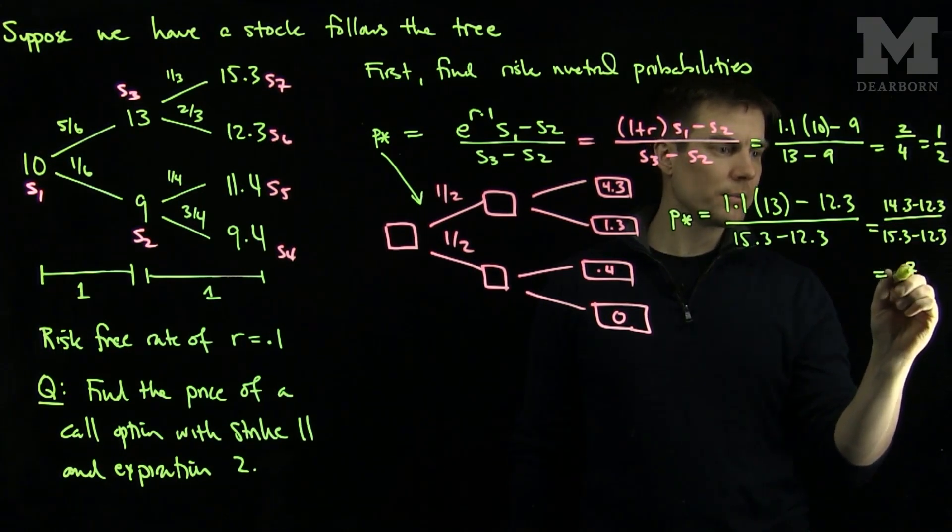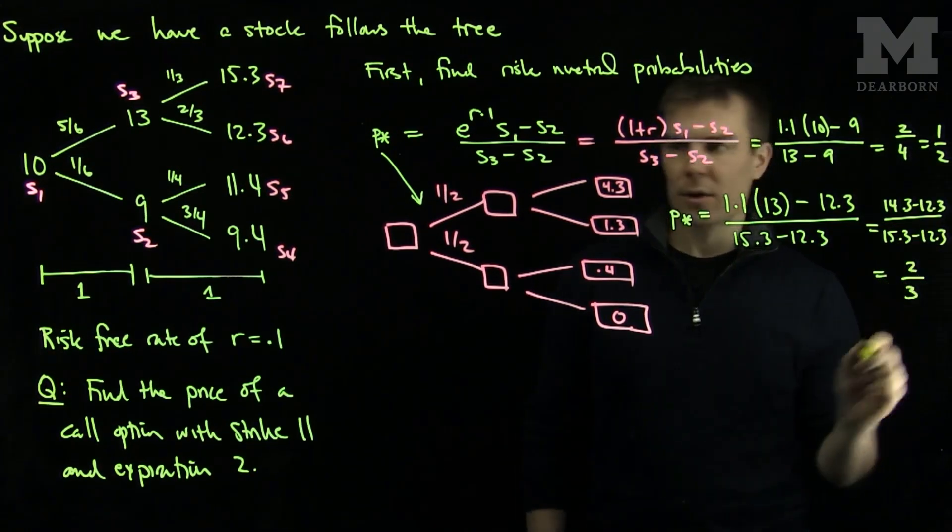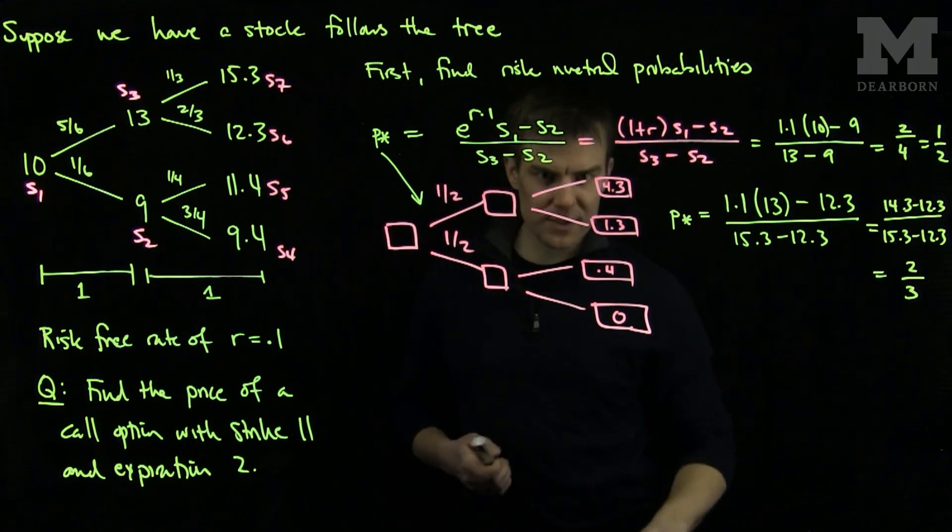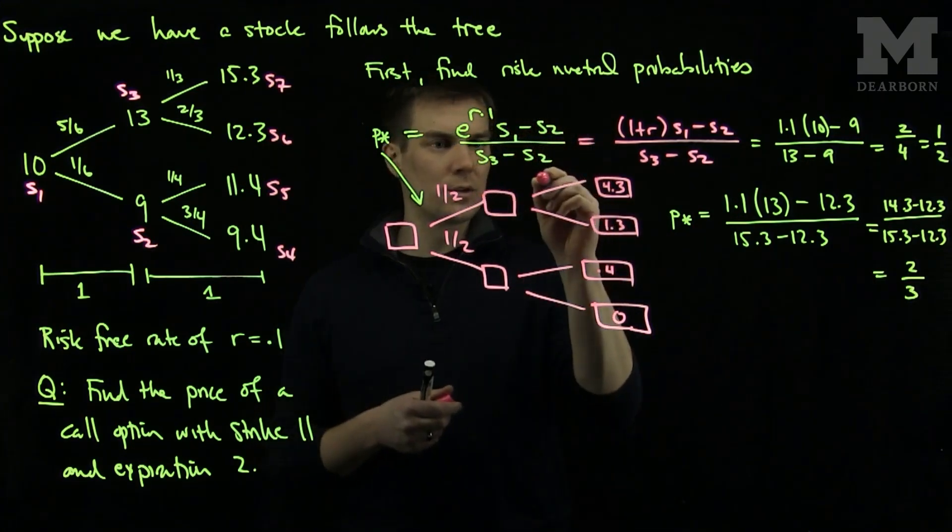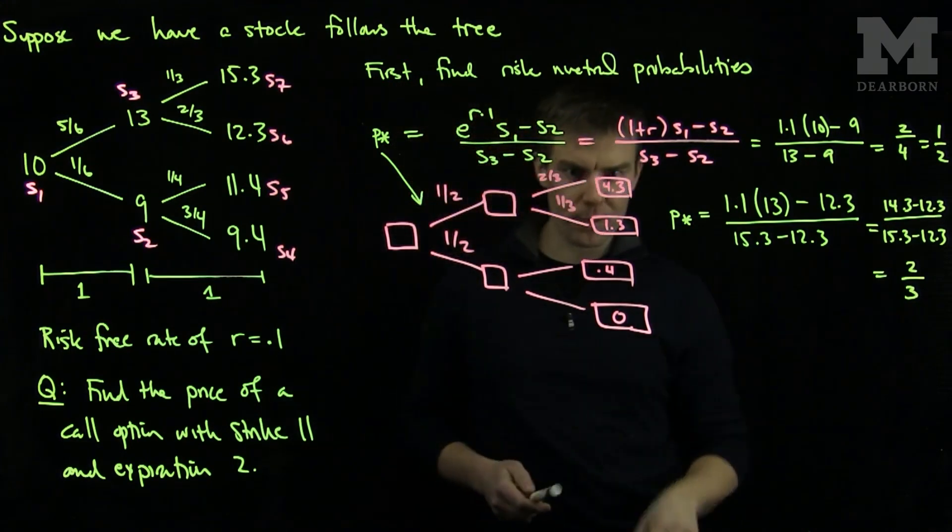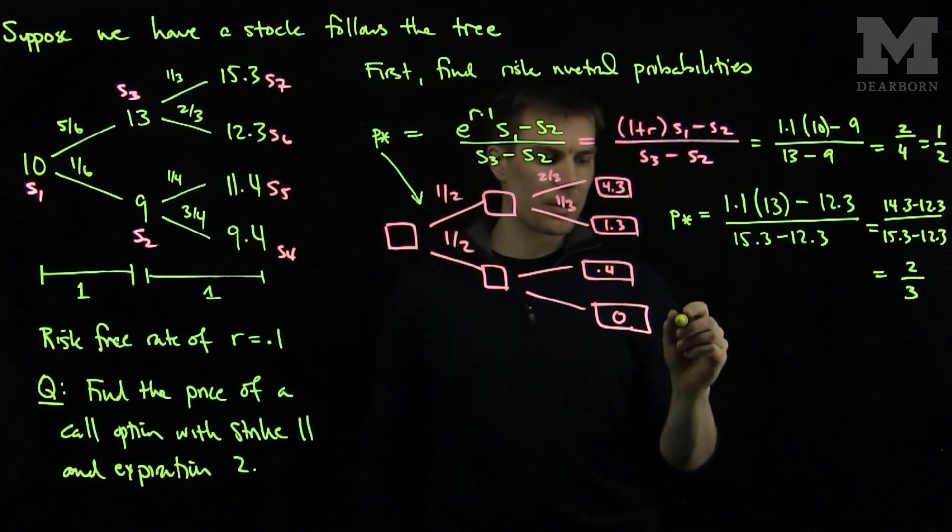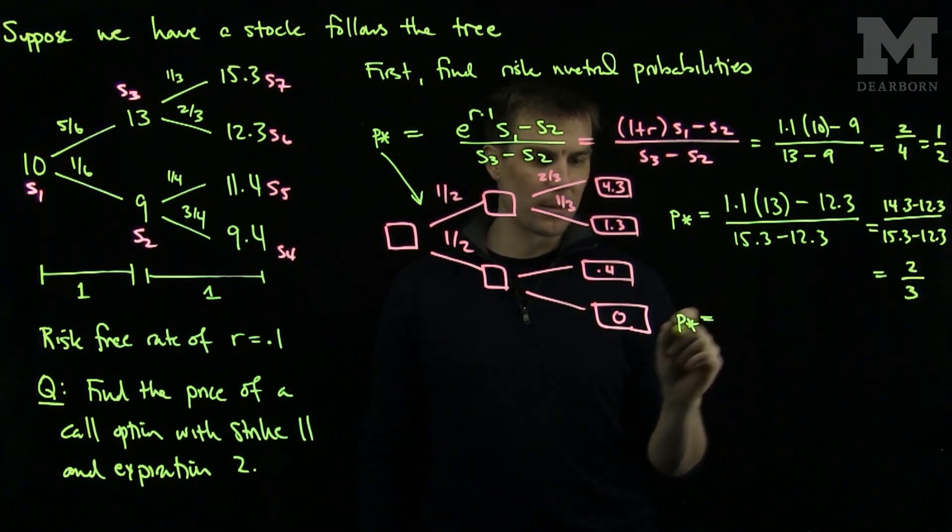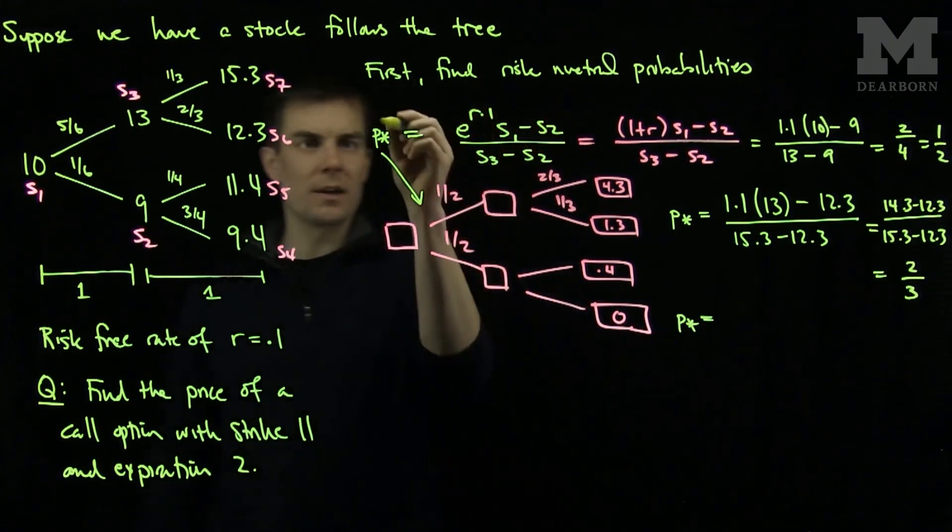So the top is 2 and the bottom is 3. So we see that the probabilities for this top part of the tree will be 2 thirds and 1 third. And finally we compute the risk neutral probabilities for the bottom part of the tree. The bottom risk neutral probabilities. So this will be for the first step.